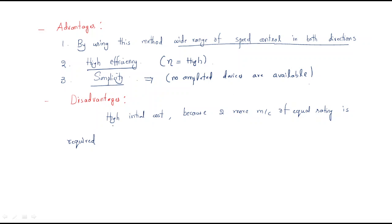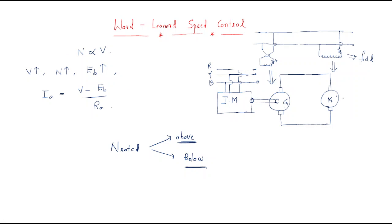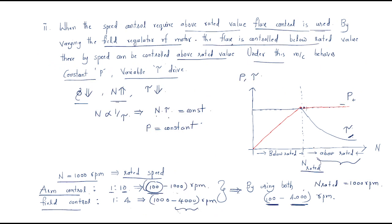Disadvantages: the first is high initial cost — the initial cost is more because two extra machines of equal rating are required. To control the speed of the main motor, we use a generator, and to maintain that generator we use an induction motor. So two extra machines are required. This is a very big disadvantage of the Ward Leonard speed control method.